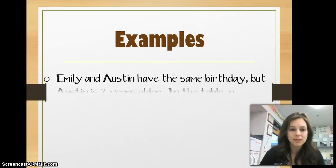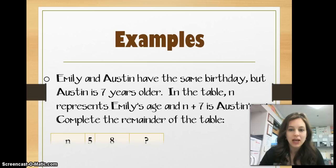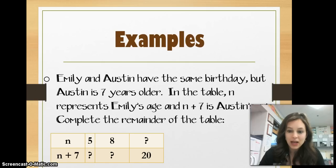Here are some examples. Emily and Austin have the same birthday, but Austin is 7 years older. In the table, N represents Emily's age, and N plus 7 is Austin's age. Complete the remainder of the table.